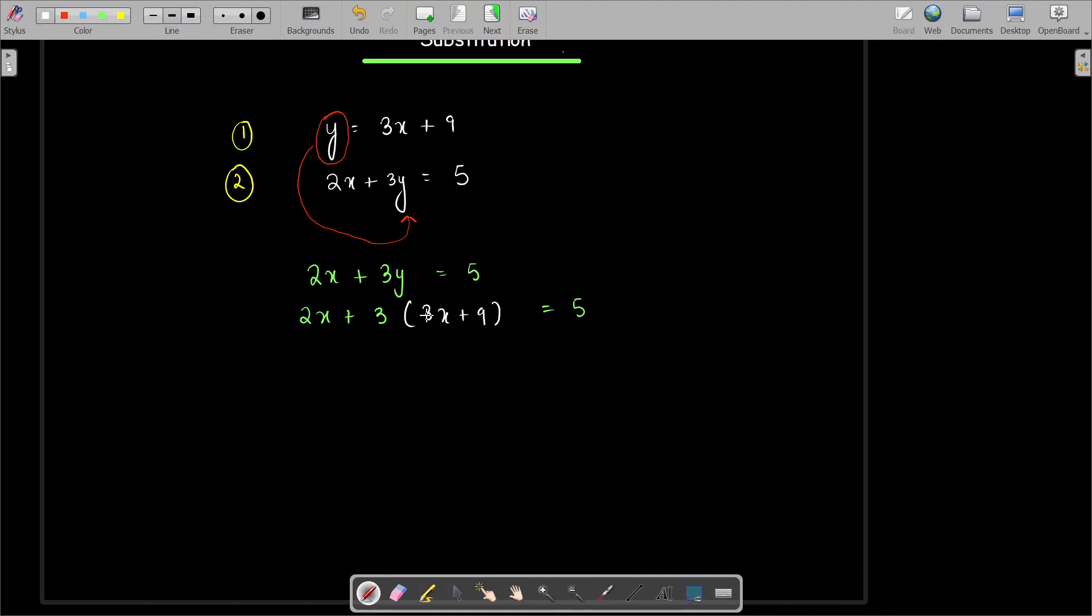Now we can see that this equation is only in X, so now we can solve it. Apply the distributive property, we get 2X plus 9X plus 27 equals 5. This is 11X plus 27 equals 5.